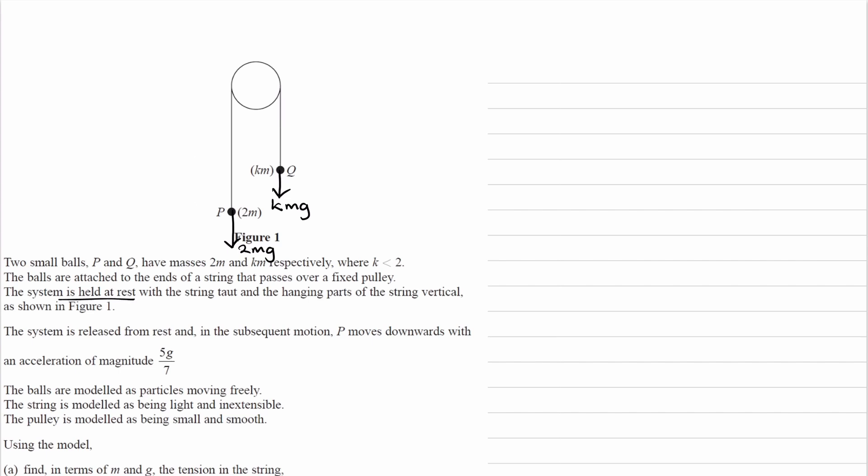It says the system is held at rest. The string is taut, and the string is vertical. We're told it's released from rest, and then P moves downwards with an acceleration of this. So let's draw that on. The acceleration of P would be 5g over 7. It says the balls are modeled as particles moving freely. The string is light and inextensible, and the pulley is small and smooth. So if the pulley is smooth, that means the tension is the same in both parts. So t, t, these are the upward forces on P and Q.